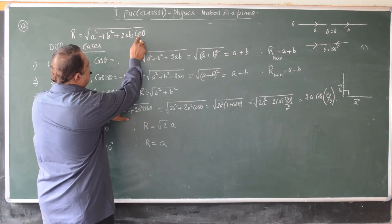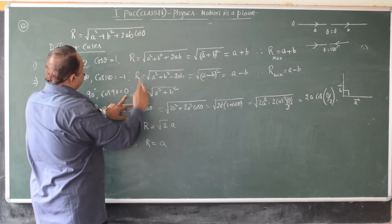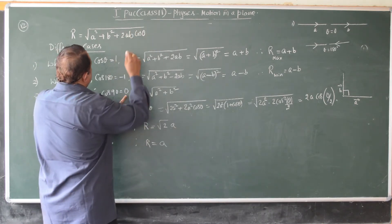So, when you substitute here, 0 into 2ab becomes zero. This term will not be present. So, r is just root of a squared plus b squared.